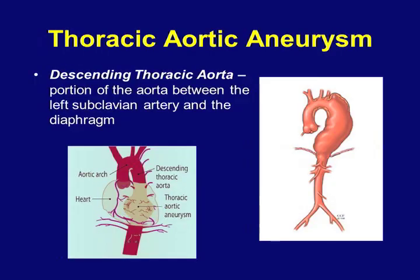The implications of any rupture or leakage from an aneurysm are life-threatening and potentially disastrous. Here we see the thoracic aortic aneurysm, which is defined by the area of the aorta between the left subclavian artery and the diaphragm.